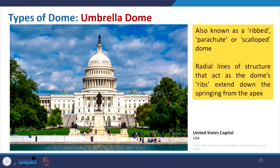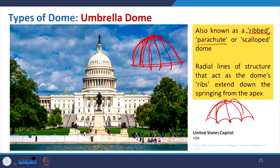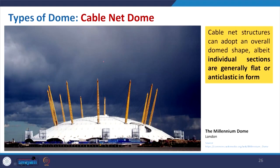Coming to the umbrella dome, also known as the ribbed or parachute dome. We know the form of a parachute, and also the umbrella — it starts with a very simple dome and then the ribs guide it to take the form of an umbrella. Taking this example — this is the United States Capitol — that is an example of the umbrella dome.